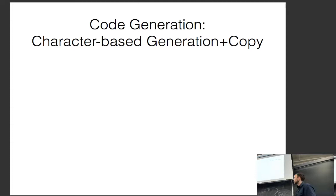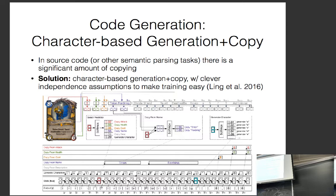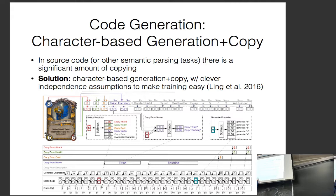These approaches were tailored for general semantic parsing to domain-specific languages. In parallel, models were developed for code generation. Code generation has a significant amount of copying required to get things correct. For example, if a card is called 'Tirion Fordring,' your generated code must include the name of the card in the init method — you need to copy the name directly.